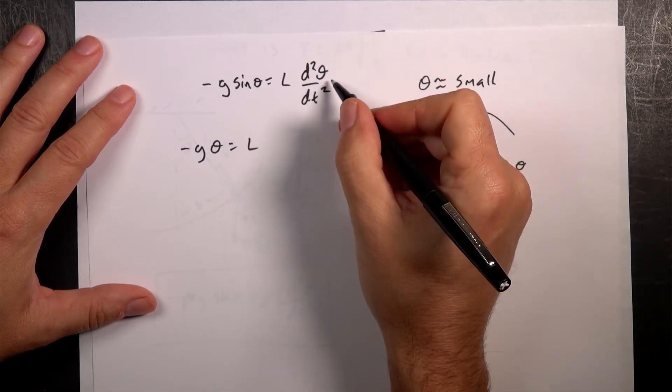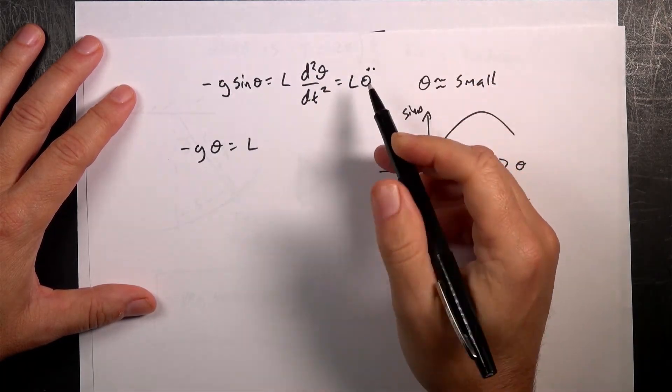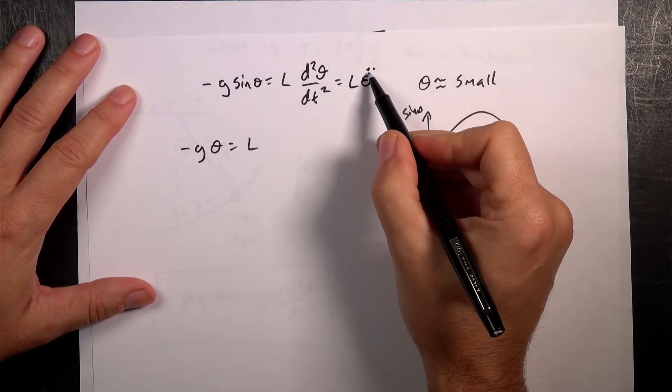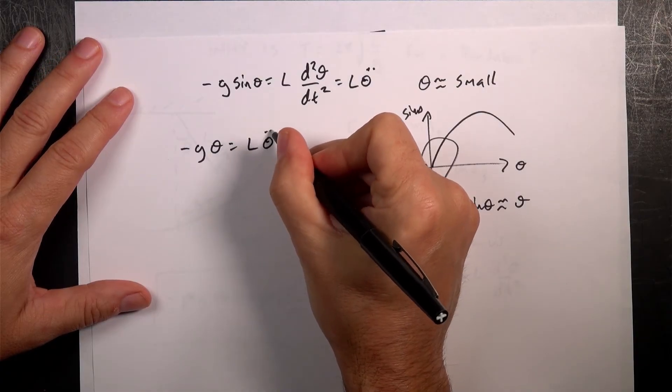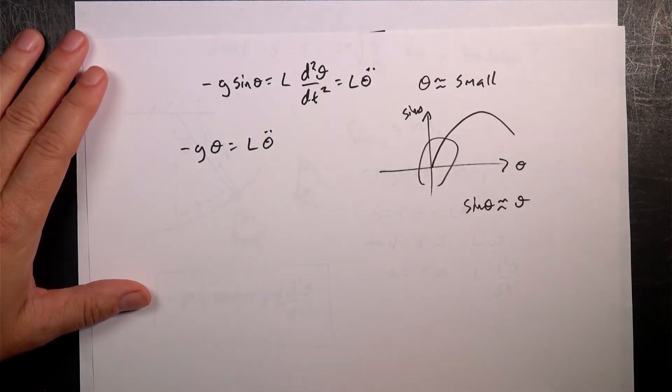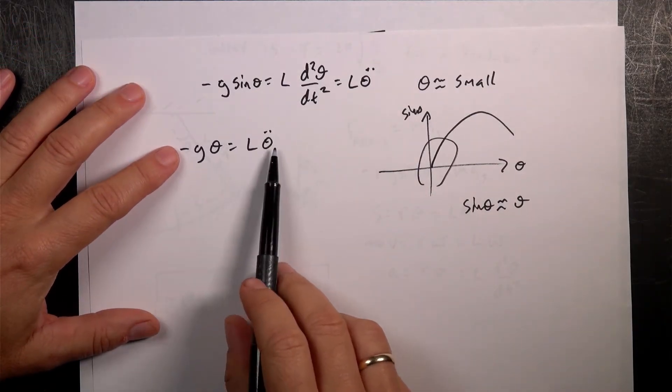I'll put this negative, well, let's see, as L. I really don't like writing this. I'm going to write this as L theta double dot. This is a notation we use in more advanced physics, where each dot represents the derivative with respect to time. So, I have L theta double dot. And this looks better, don't you think?